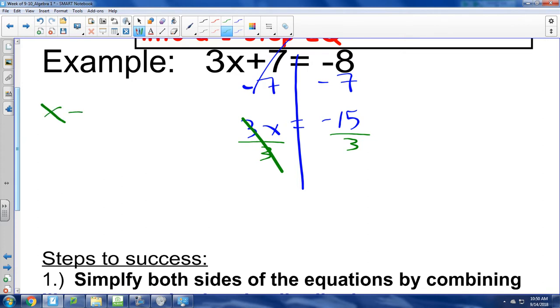So we have x is equal to negative five. Negative five. Good. Don't forget that a negative divided by a positive is a negative. So we have x is equal to negative five.